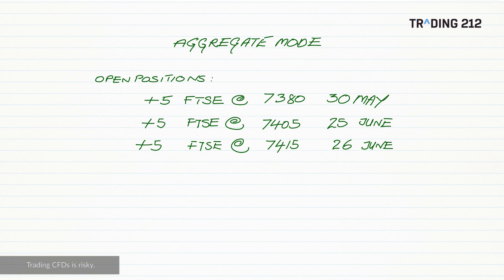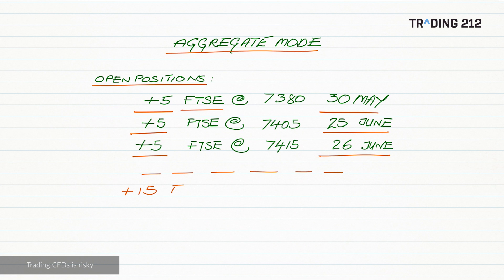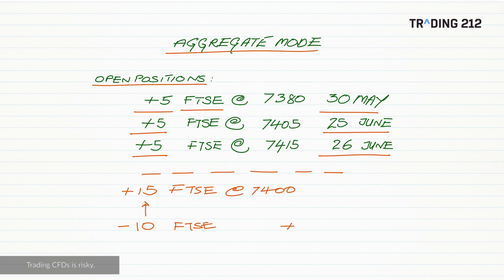Let's look at an example to illustrate aggregate mode. Let's say I've taken these actions to open new positions: I bought five of the FTSE on the 30th of May, another five on the 25th of June, and five on the 26th of June. In aggregate mode, these positions get aggregated, so what I would actually have open is long 15 at an average price of the FTSE of 7400. Now if I sold 10 pounds per index point of the FTSE, it would automatically net that off against the open position, leaving me long five net at my average price of 7400.